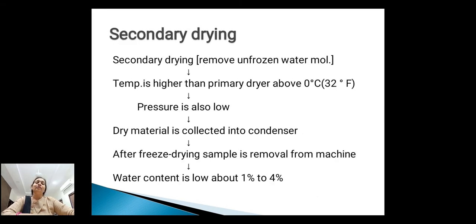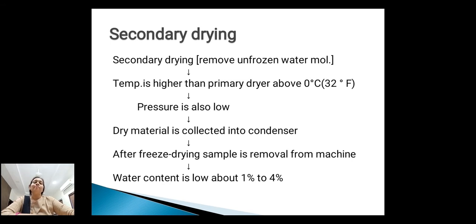Next, secondary drying, which removes unfrozen water molecules. The temperature is higher than in primary drying — above 0 degrees centigrade or 32 degrees Fahrenheit — and pressure is also low. Dry material is collected into the condenser. After freeze drying, the sample is removed from the equipment. At the end of the process, the water content is low, about 1 to 4 percent.